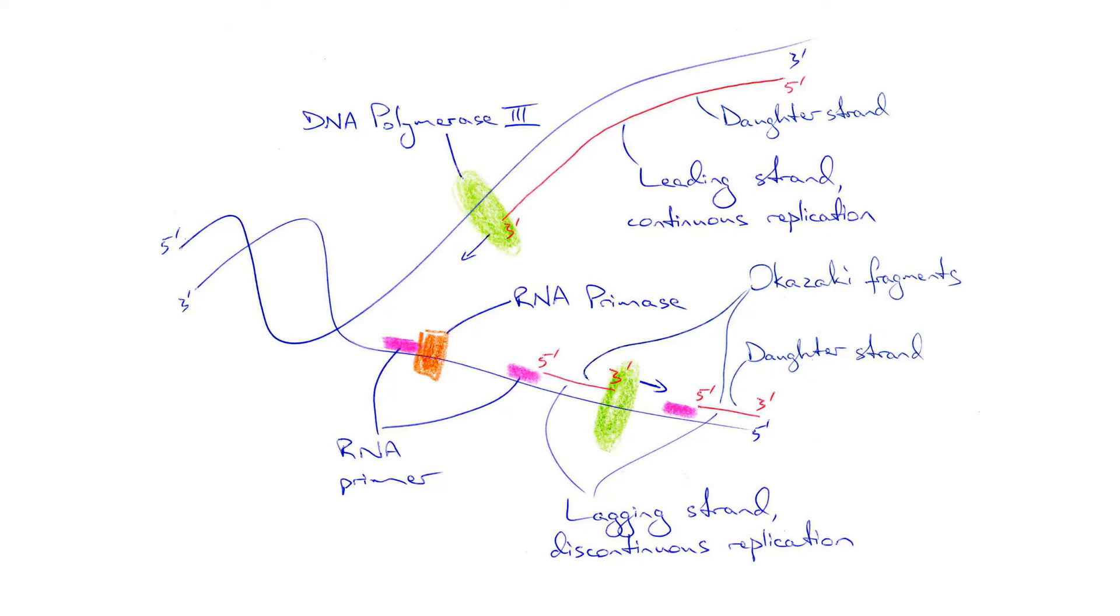As helicase continues to separate the double-stranded DNA, an empty space will be opened up behind the RNA primer of the second template strand. To overcome this issue, another RNA primer is laid down by RNA primase closer to the newly opened up replication fork.